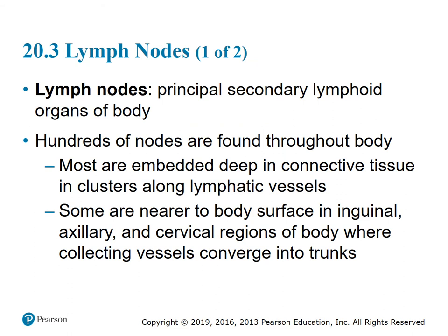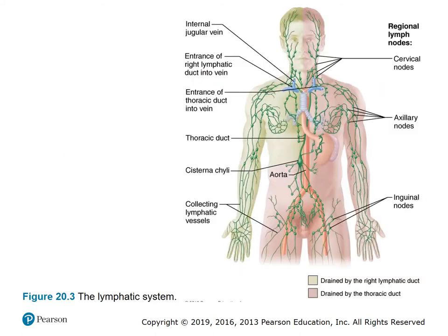Section 20.3: Lymph nodes. Lymph nodes are the principal secondary lymphoid organs of the body. Hundreds of nodes are found throughout the body; most are embedded deep in connective tissue in clusters along lymphatic vessels. Some are near the body surface in the inguinal, axillary, and cervical regions where collecting vessels converge into trunks. Figure 20.3 shows the components of the lymphatic system.